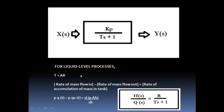ρq(t) minus ρq_o(t) equals d(ρAh)/dt. With integration and application of Laplace transforms, we arrive at the formula h(s)/q(s) = R/(τs + 1). Here, h(s) represents the controlled variable — the change in height — and q(s) is the disturbance in volumetric flow. R represents the relative change of height per volumetric flow, and tau is the time required for the steady-state volume of a tank to be drained.